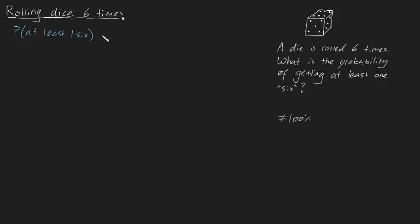And if you think about it, it means that it's the same thing as the probability of getting exactly one six, or exactly two sixes, or exactly three sixes, or exactly four, five, or six sixes in six die rolls.